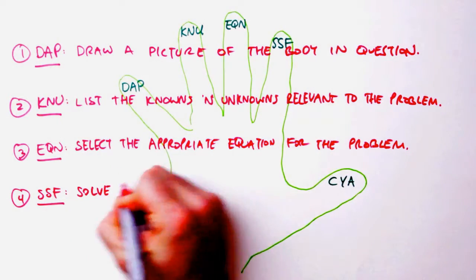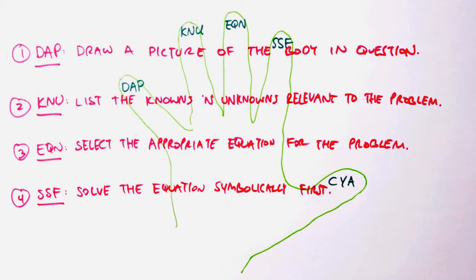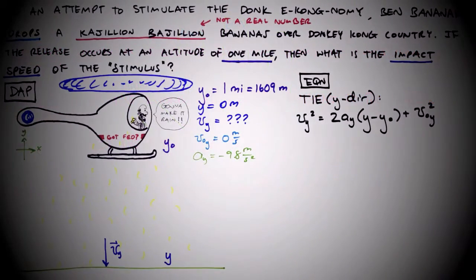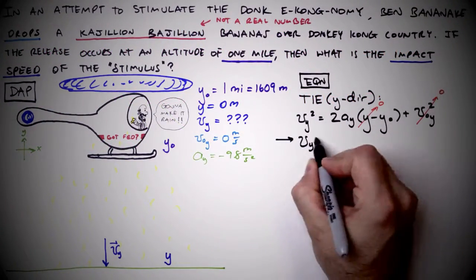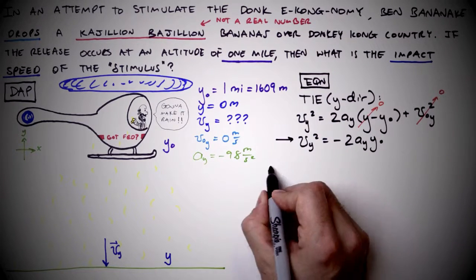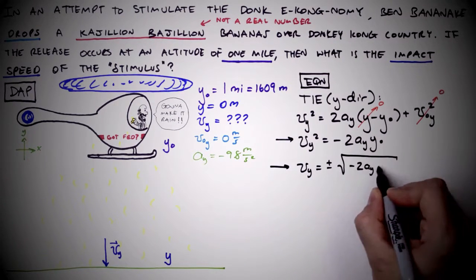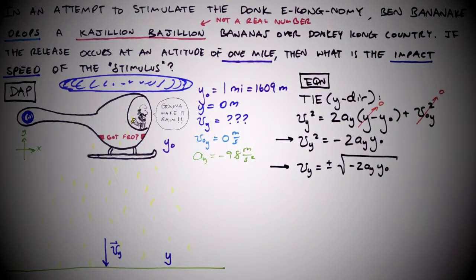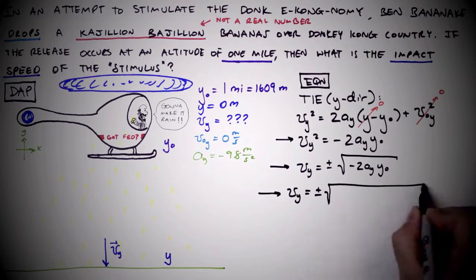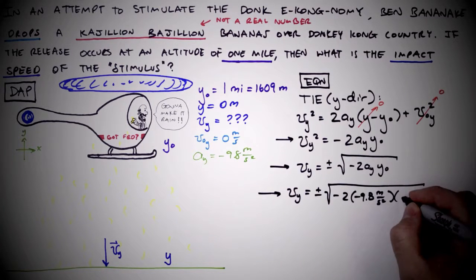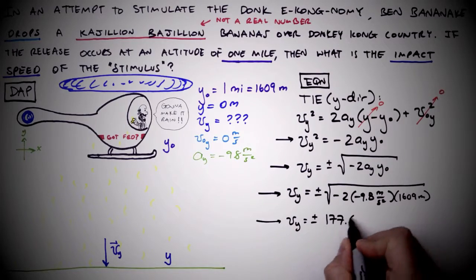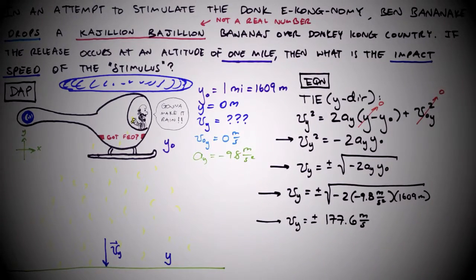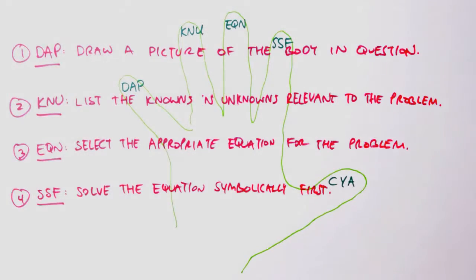Step 4. Solve the equation symbolically first. Numerical values should only be inserted once the equation has been solved for the unknown. Terms will often cancel, simplifying solutions, and much physical insight about our world can be gained from delaying the gratification that comes with plugging and chugging. Oh, and don't forget the units when inserting numerical values. Units are such an important and helpful aspect of problem solving that forgetting them is practically an unpardonable sin. It's like I always tell my students: You take care of your units, and your units will take care of you.